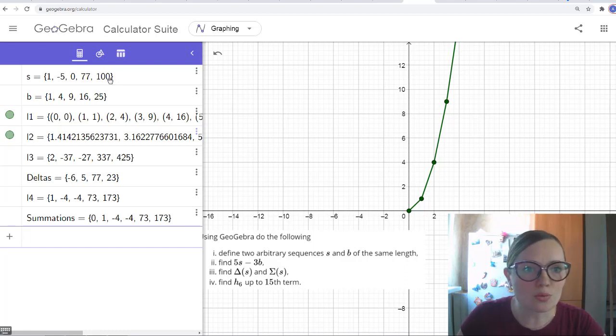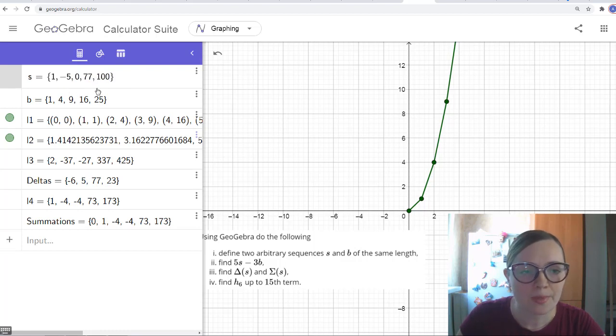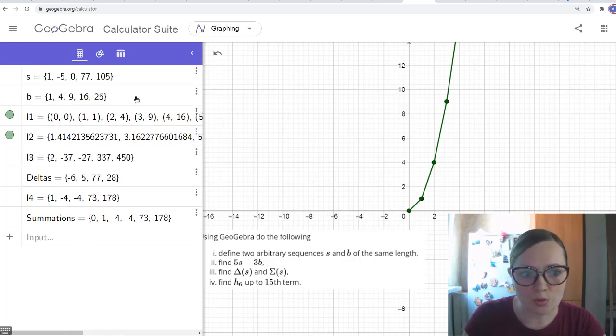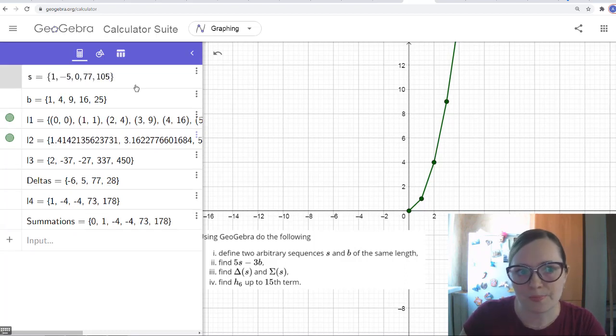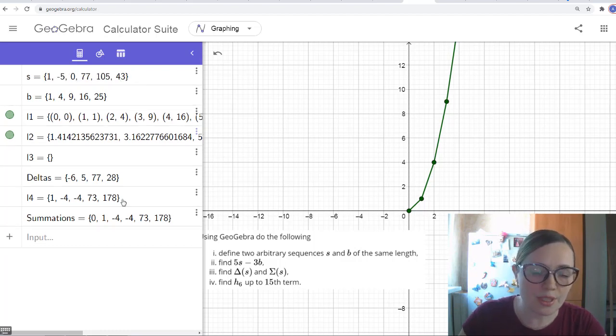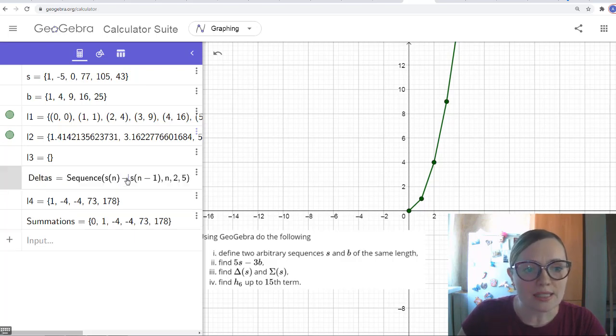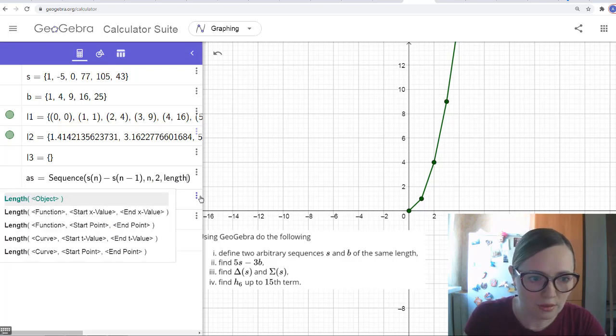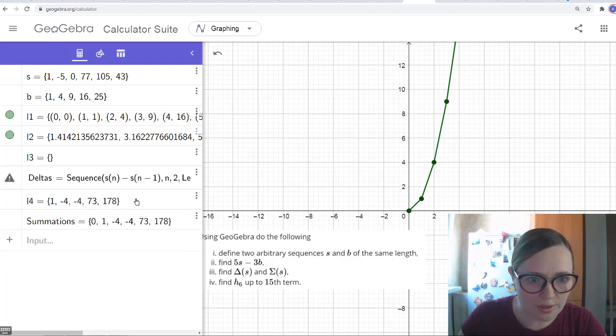And sometimes it's useful if you, for example, want to change s. You want this delta s and summation of s also automatically be changed. For example, if you change just numbers, it's okay. It will be different. But if you change the length of this s. For example, I want to add one more term, let's say 43. I want this sequence automatically to be changed. Also, in this case, it's good to add here not 5, but there is some operation length of s, of the sequence s.